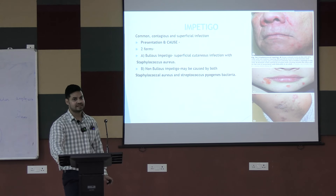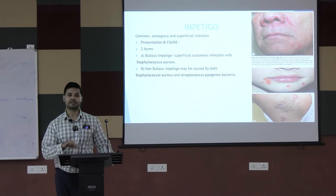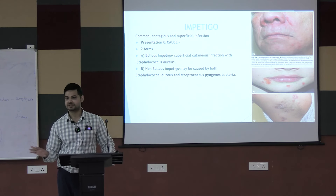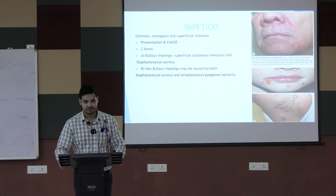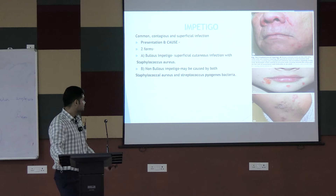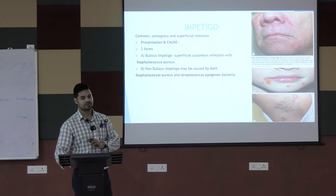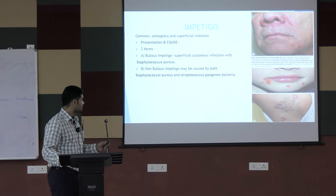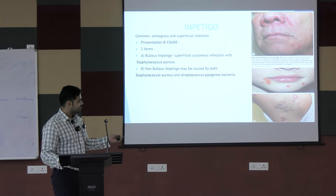Impetigo is very simple — it has no major complications and is usually self-limiting. Even without treatment, it resolves in two weeks. There are two forms: non-bullous, which is much more common, and bullous, which is very uncommon. In bullous impetigo, the causative agent is mostly Staph aureus — about 70% of cases. In non-bullous, both Staph aureus and Streptococcus are involved.